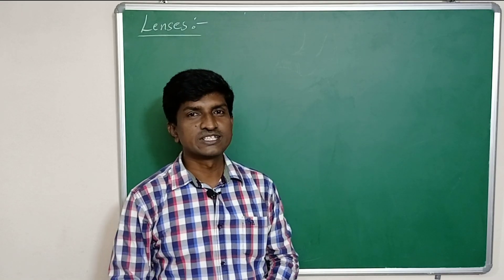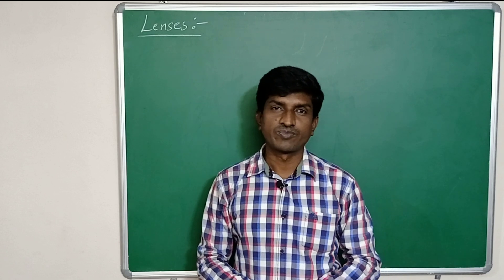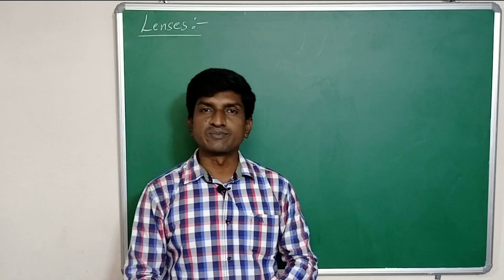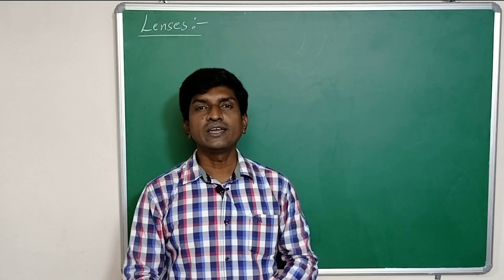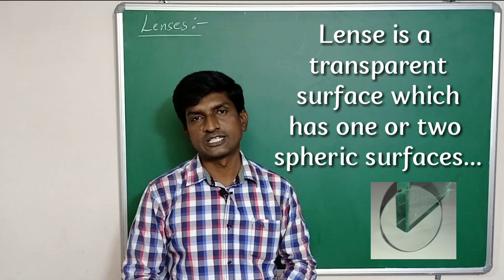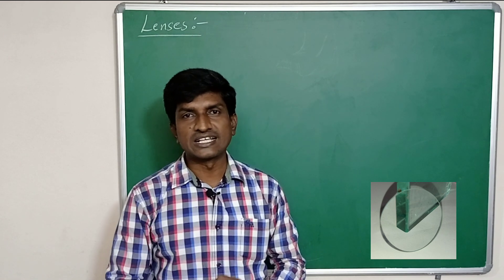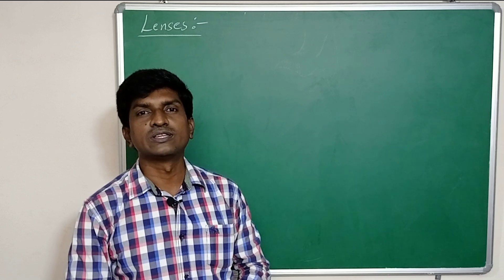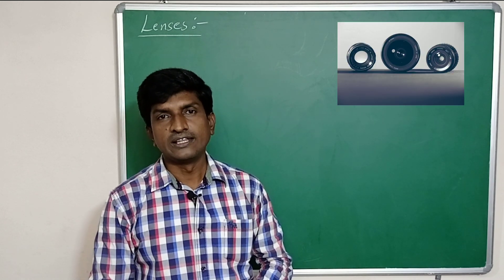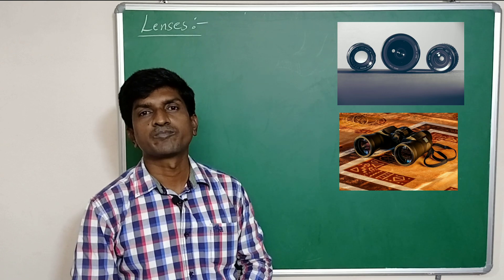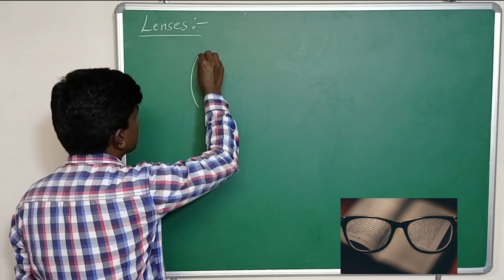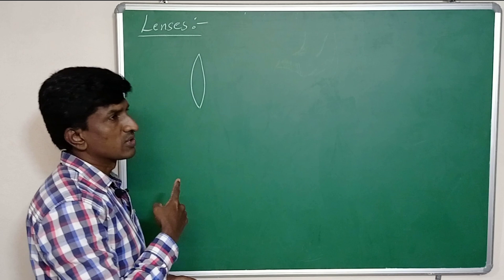Welcome students. Now we will discuss lenses. So what is a lens? A lens is a transparent substance which is bounded by two curved surfaces, or at least one curved surface. This transparent substance is said to be a lens.